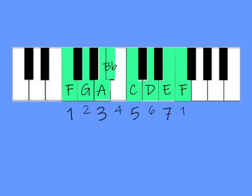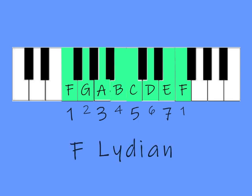F, the 4 note, normally would have 1 flat in its scale. But in the C scale, it gives up its flat. F without its flat is called F Lydian, the 2nd of the 2 major modes.